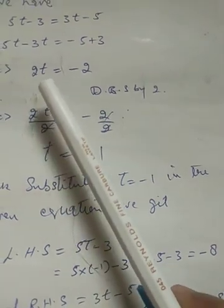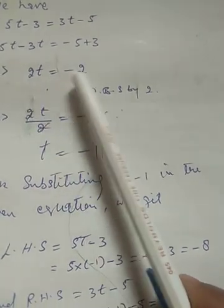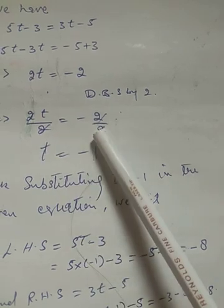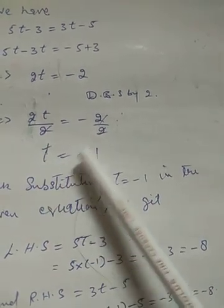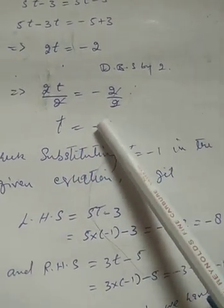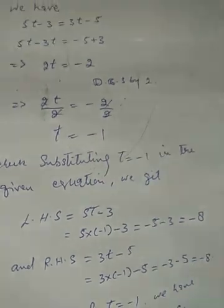Dividing both sides by 2, we get 2t divided by 2 equals minus 2 divided by 2. 2 and 2 is cancelled, so t equals minus 1.